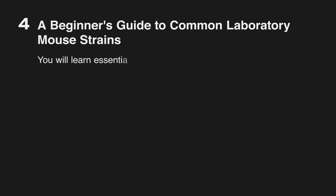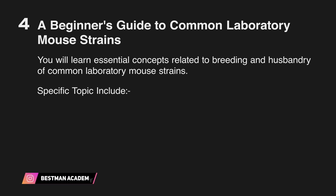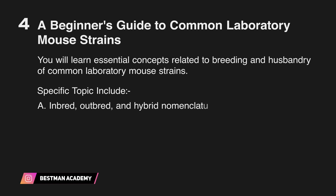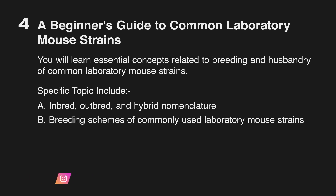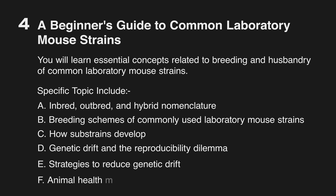Number four: a beginner's guide to common laboratory mouse strains. In this course, you will learn the essential concepts related to breeding and husbandry of common laboratory mouse strains. Specific topics include inbred, outbred, and hybrid nomenclature, breeding schemes of commonly used laboratory mouse strains, how substrains are developed, genetic drift and the reproducibility dilemma, strategies to reduce genetic drift, animal health monitoring, and mouse room housing conditions.